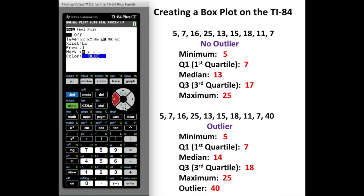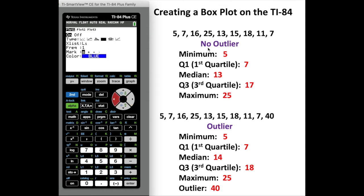Now when I go down I've got to choose the type of graph that I want the calculator to create. If I go to the right, this first one will give you a box plot with an outlier if there is an outlier in the list. The second one will give you a box plot and will not show any outliers. For the most part I always choose the first one, just in case the list has outliers — it's going to find that automatically for you. The X list is L1, frequency is 1, and you can choose whatever color you want.